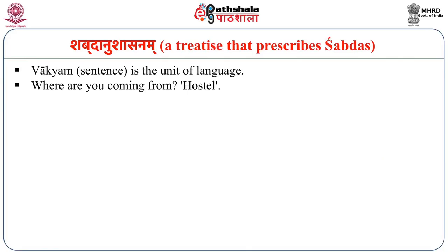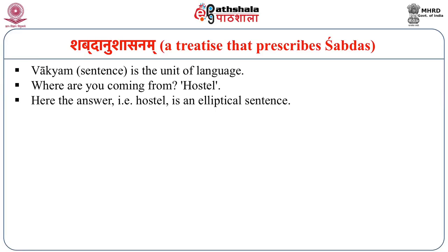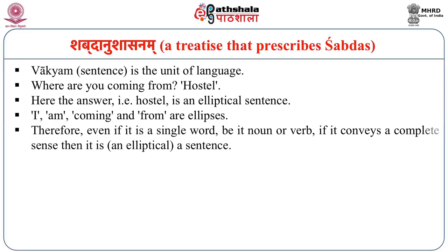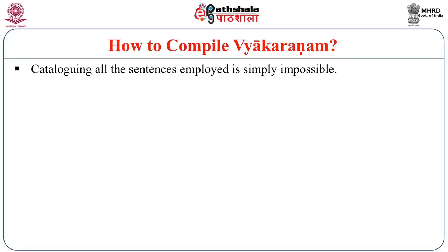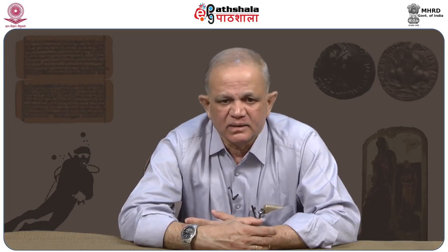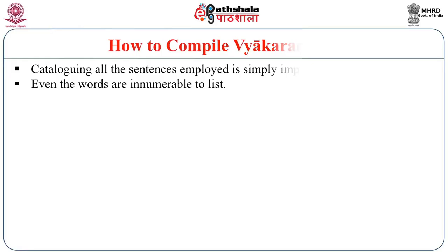Vakyam (sentence) is the unit of language. For example, 'Where are you coming from?' — the answer 'Hostel' is an elliptical sentence, meaning an incomplete sentence where the full form would be 'I am coming from the hostel.' Therefore, even a single word — whether noun or verb — if it conveys a complete sense, is called an elliptical sentence. How to compile Vyakaranam? Cataloguing all sentences employed is simply impossible, as sentences past, present and future are infinite. Even words are too numerous to list.